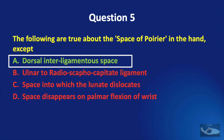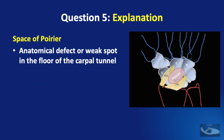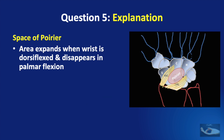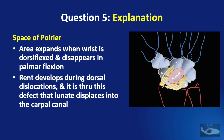The answer is dorsal interligamentous space. The space of Poirier is in fact a volar interligamentous space present in the floor of the carpal tunnel. It lies at the volar aspect of the proximal capitate between the volar radioscaphocapitate ligament and the volar radiotriquetral ligament. This space expands when the wrist is dorsiflexed and disappears in palmar flexion. A rent develops during dorsal dislocations, and it is through this defect that the lunate displaces into the carpal canal.